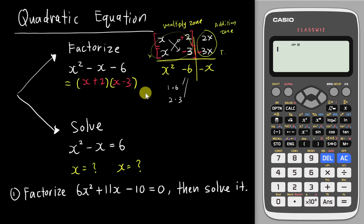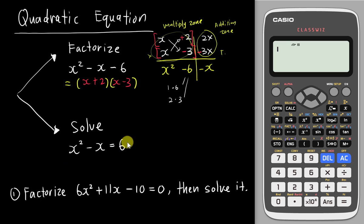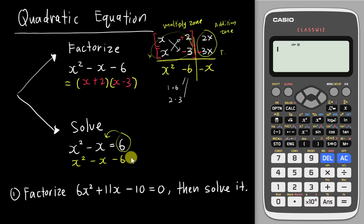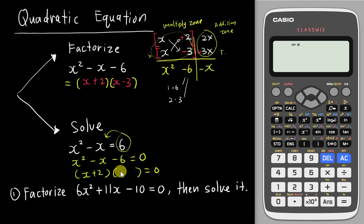If I want to solve it, it's a different story. I must make sure this equation is equal to 0. So I move the positive 6 to the other side to make it equal to 0. Then only I can start to factorize. So x squared minus x minus 6 equals 0 — this is the general form of the quadratic equation. I already know the answer is x plus 2, x minus 3.